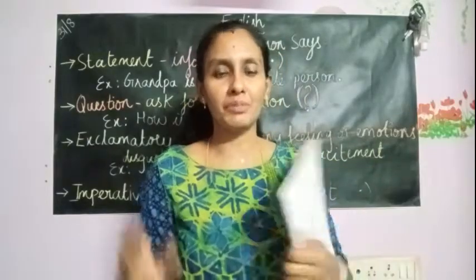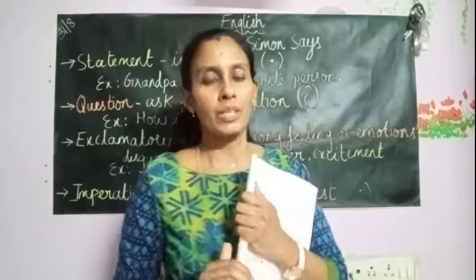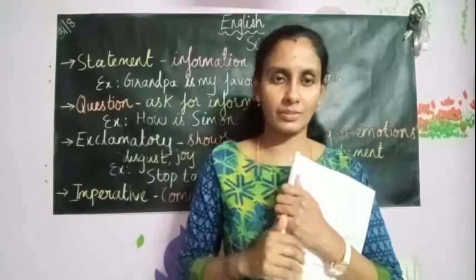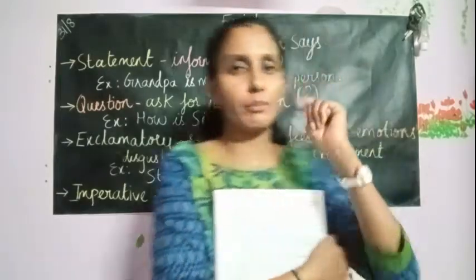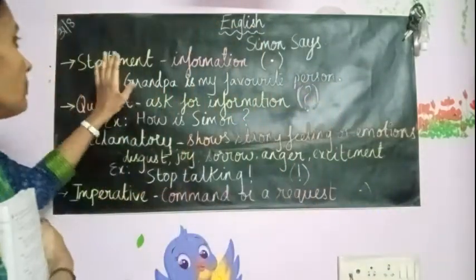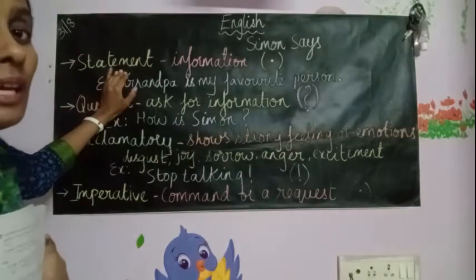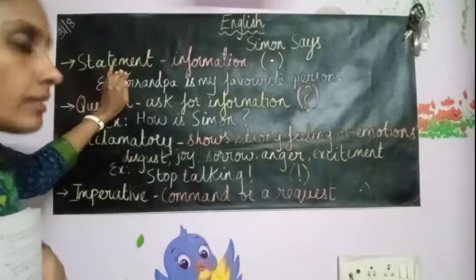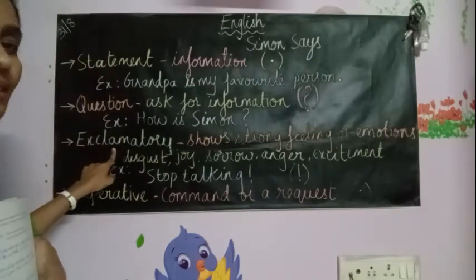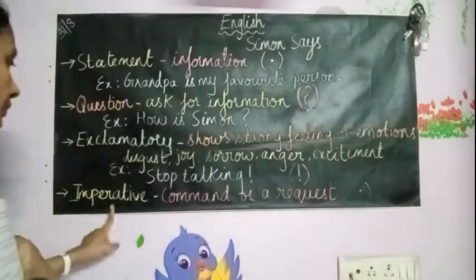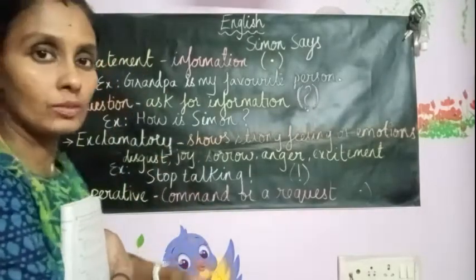The next part of grammar we will be learning about is kinds of sentences. In a sentence we have four types. I have written it on the board. The first one is statement, the second one is a question, the third one is exclamatory, and the fourth one is an imperative. So we have four kinds of sentences.